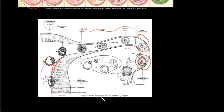Progesterone and estrogen, secreted by the corpus luteum, help maintain the thickness of the endometrium. It's very important that this thickness is maintained because the maternal tissue will combine with fetal tissue to form the placenta.